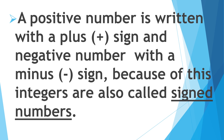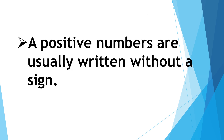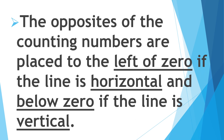A positive number is written with a plus sign, and a negative number with a minus sign. Because of this, integers are also called signed numbers. Positive numbers are usually written without a sign. The opposites of counting numbers are placed to the left of zero if the line is horizontal, and below zero if the line is vertical.